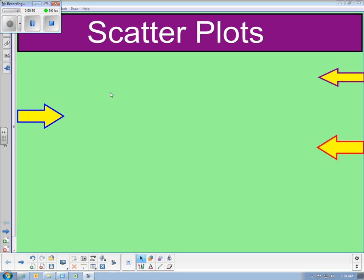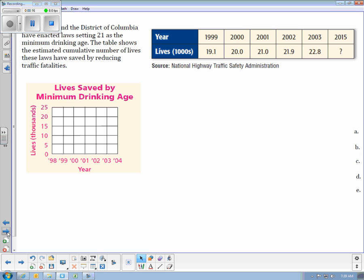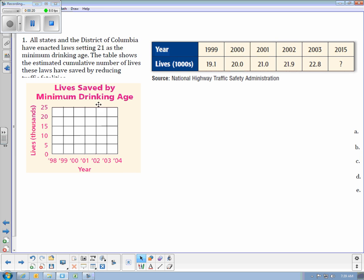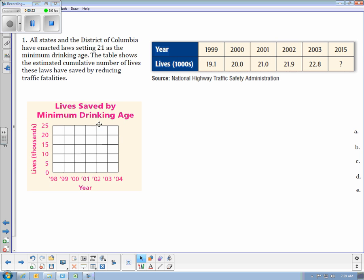The first example up at the top of our page says, All states and the District of Columbia have enacted laws setting 21 as the minimum drinking age. The table shows the estimated cumulative number of lives saved by reducing traffic fatalities. So we want to take the table and plot the information using a scatterplot.